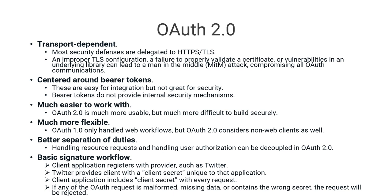In the OAuth 2.0 basic signature flow, the client application registers with the service provider such as Twitter. Twitter provides the client with a client secret — not a consumer secret — unique to that application. The client application includes the client secret with every request, and if any OAuth request is malformed, missing data, or contains the wrong secret, the request will be rejected.